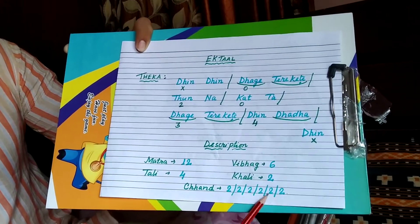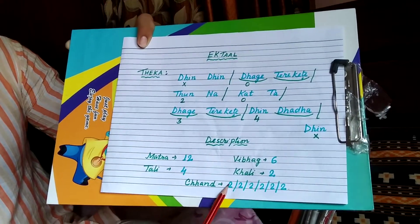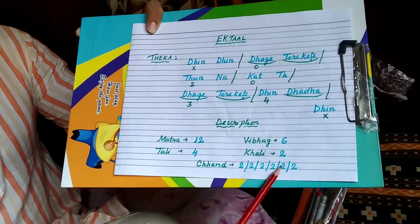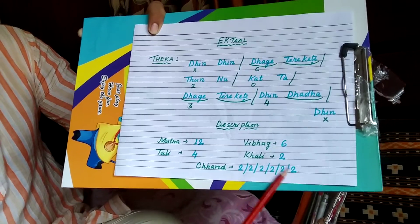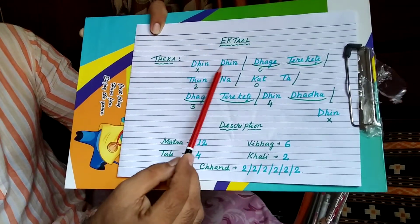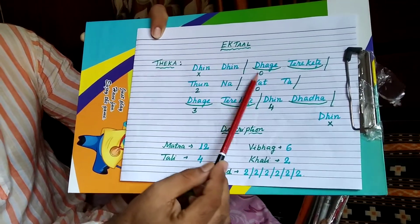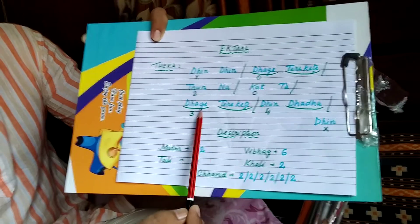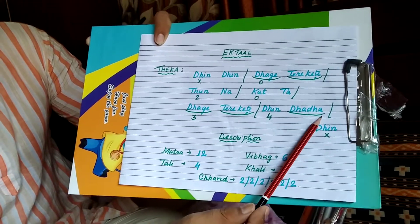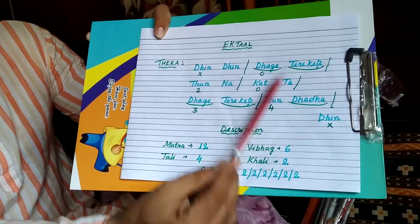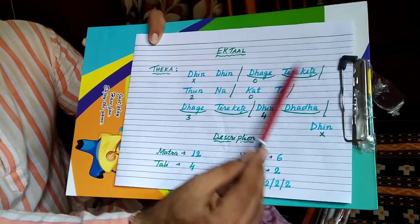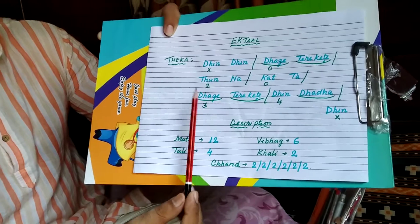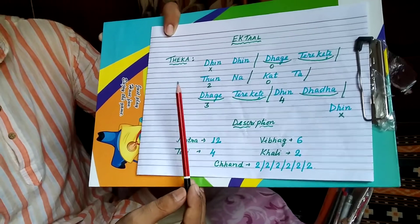The Chunk is 2 by 2 by 2 — so every division has got 2 Matras, equally distributed: 2 by 2, 2 by 2, 2 by 2. Now I will recite the Theka for you — please learn how to recite it.